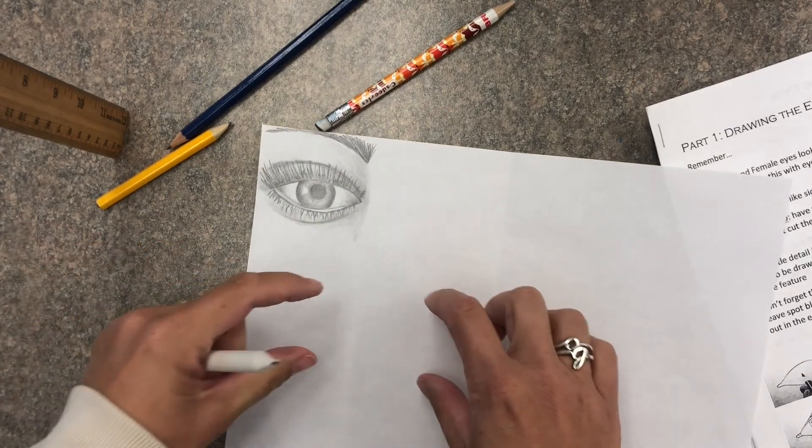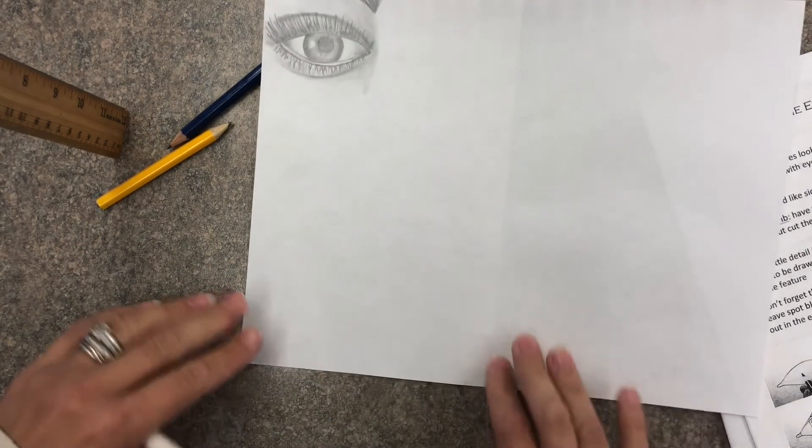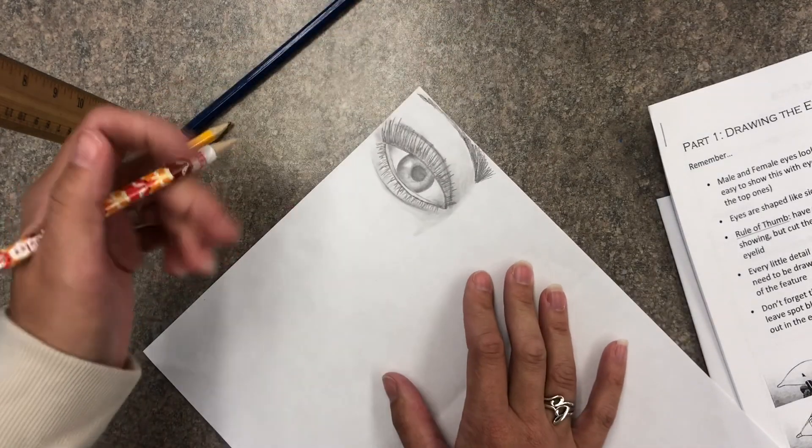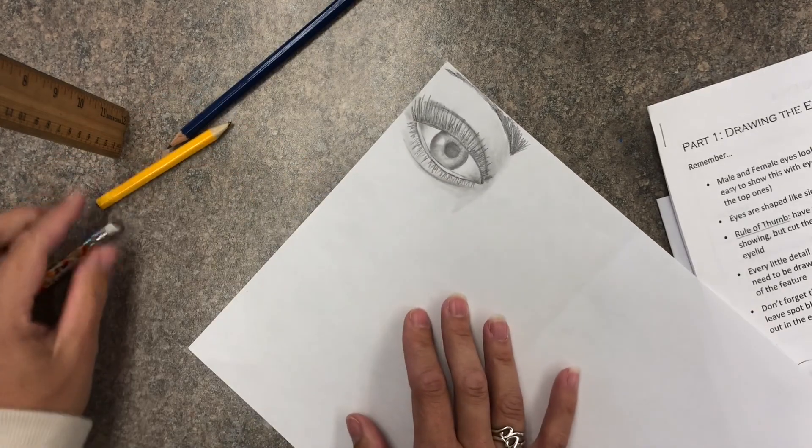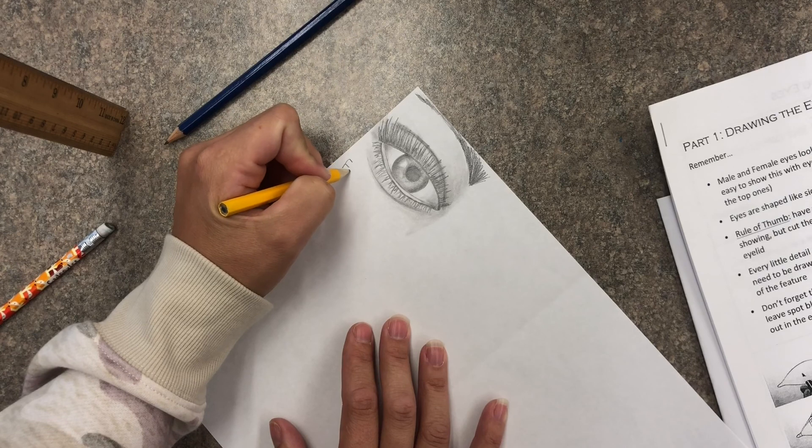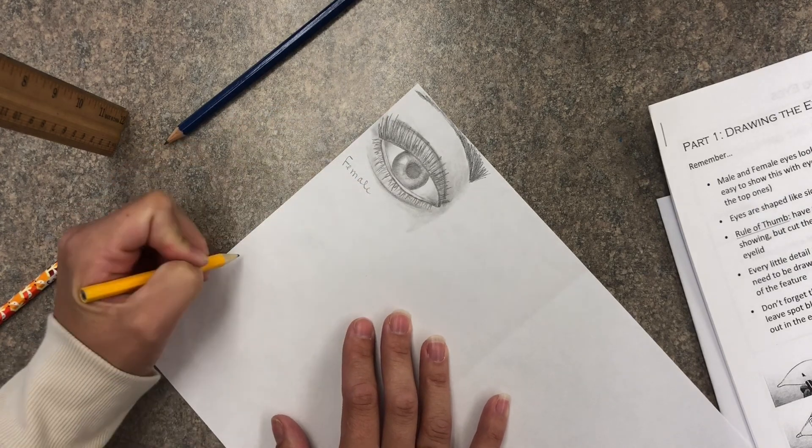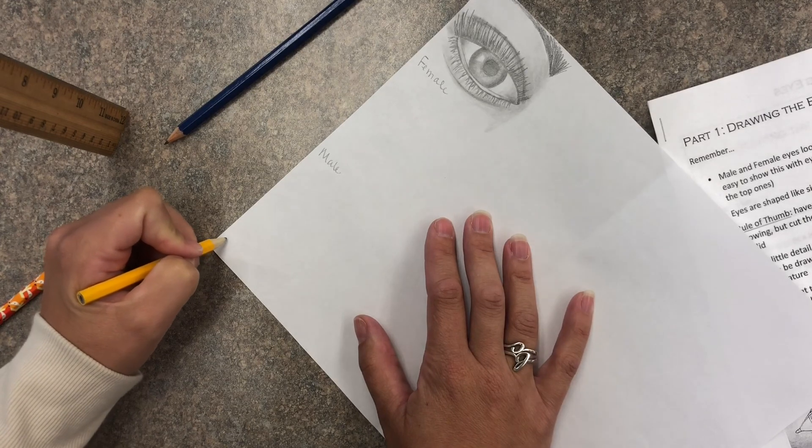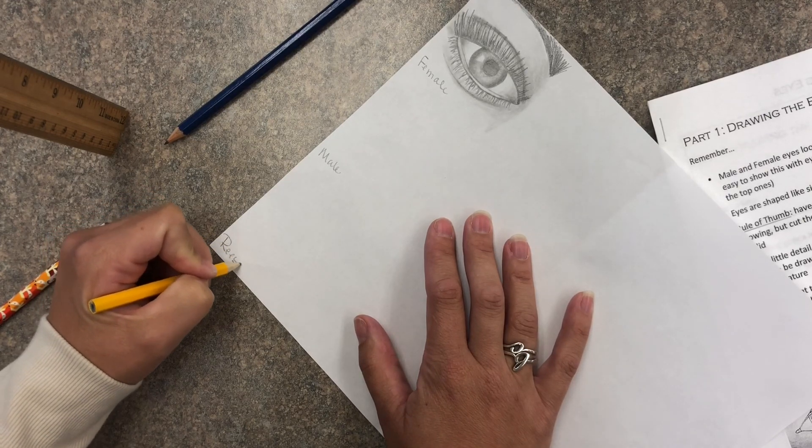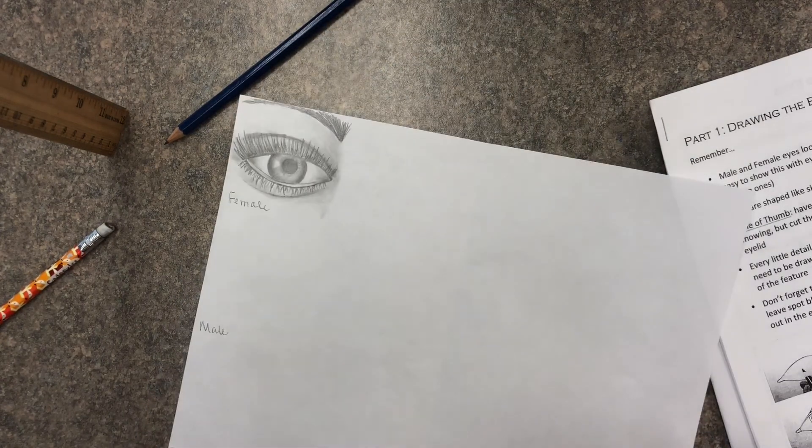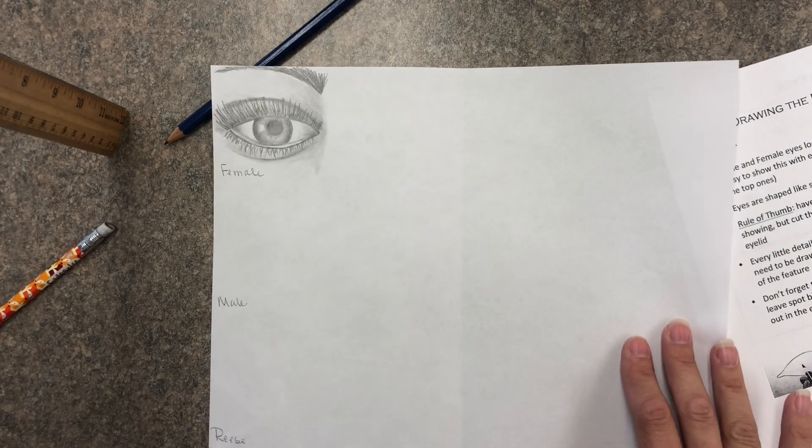Okay so now try to draw the other eye female eye male eyes and then draw the eyes of the famous person you're drawing so you can label on your paper I would like you to label your eyes so these are female male and then your famous person so if I'm going to draw Reese Witherspoon okay so you have that there that there.